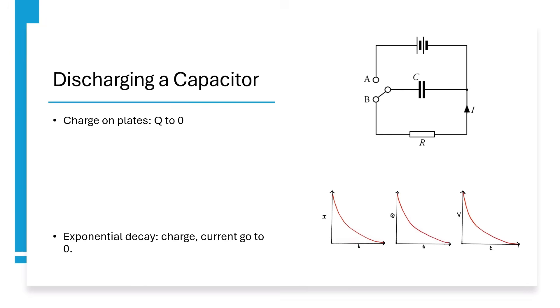We can also discharge a capacitor in the circuit with no battery. Again, we start with the loop equation and solve by separating and integrating. We find that when discharging, charge on the plates decays exponentially along with current.